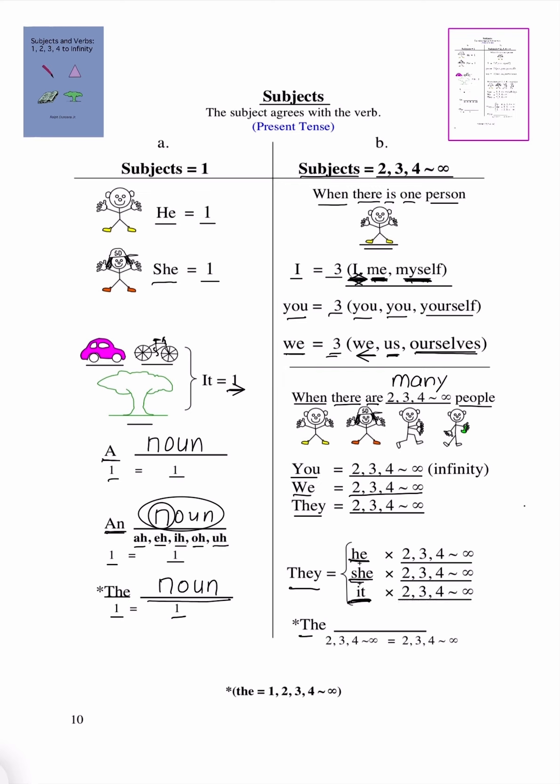Then, we are going to have the word the. The, and the next word is going to be a noun. The is going to equal 2, 3, 4 to infinity. And the noun will equal 2, 3, 4 to infinity.